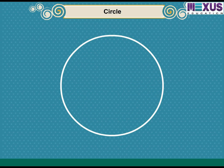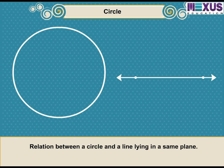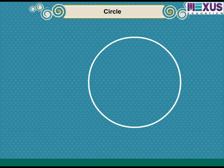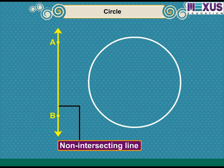Let us now learn about terms related to the relation between a circle and a line lying in the same plane. For this circle, the line AB and the circle have no common point. We see that the line is not intersecting the circle at any point. Hence, line AB is called a non-intersecting line with respect to the circle.